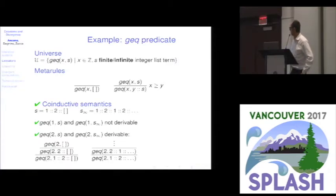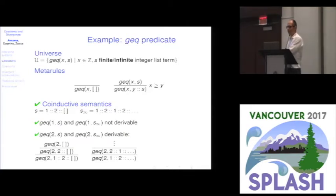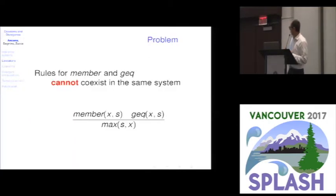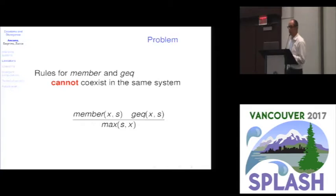The semantics of an inference system has an all-or-nothing approach: all judgments in a system follow either the inductive or the coinductive interpretation. This is a problem because for the member predicate we need the inductive interpretation, while for the geq predicate we need the coinductive one — they cannot coexist in the same inference system. For instance, if we want to define a predicate max checking whether an element is the maximum of a list, defined in terms of these two predicates, we cannot do that.